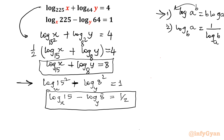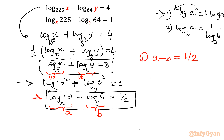Now I will apply substitution. Let a equal log 15 base x and b equal log 8 base y. By property 2, log x base 15 equals 1 over a and log y base 8 equals 1 over b. Converting to equation form: equation 1 becomes a minus b equals 1/2, and equation 2 becomes 1/a plus 1/b equals 8.